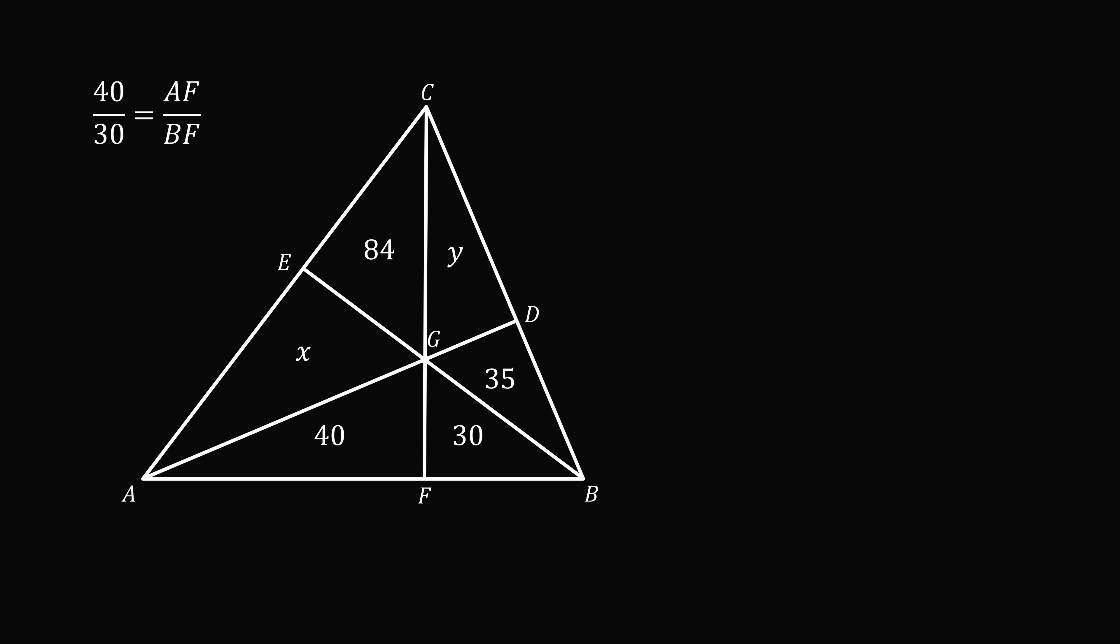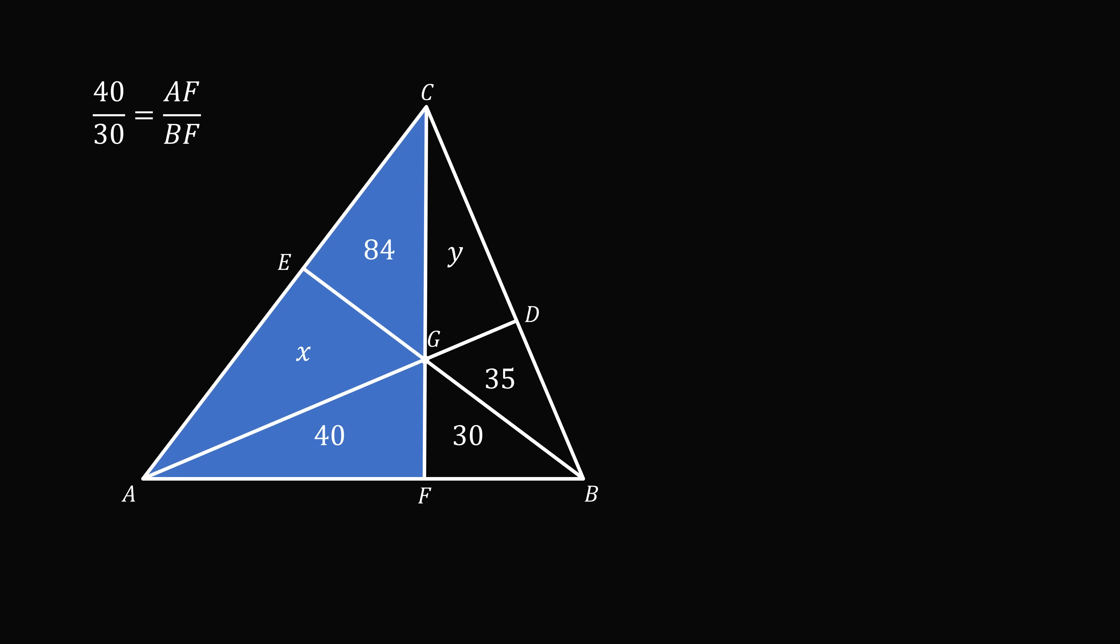We will do another calculation just like this. Let's consider another triangle with the base AF. Let's consider triangle ACF. Now let's construct the height from the vertex C to the base AF. Let's say this has height capital H. So what's the area of this triangle? It will be the sum of the three areas 40, x, and 84. So this will be 124 plus x is the area, and that's also equal to one half times the base AF times capital H, the height.